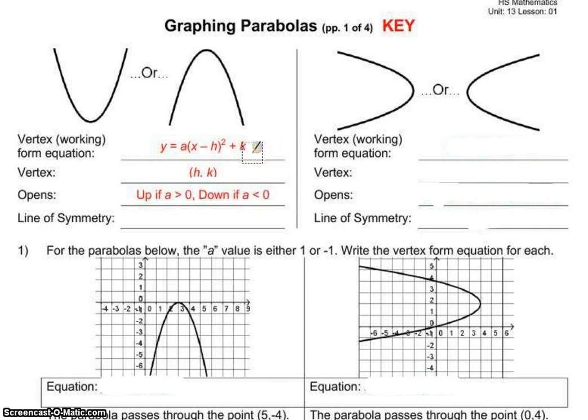Don't forget that my line of symmetry is always going to go through my vertex, so it's going to be x equals h.